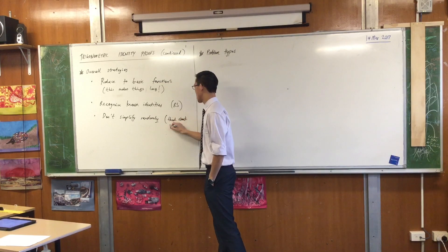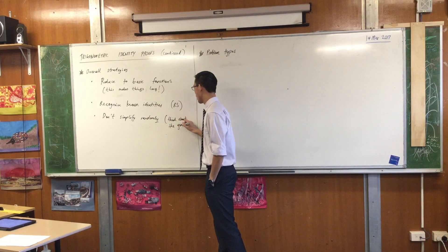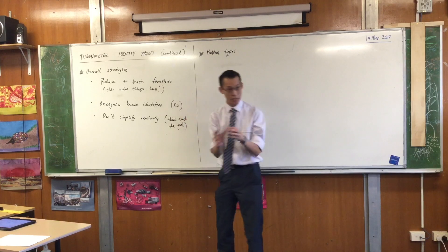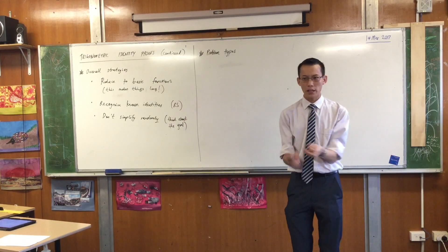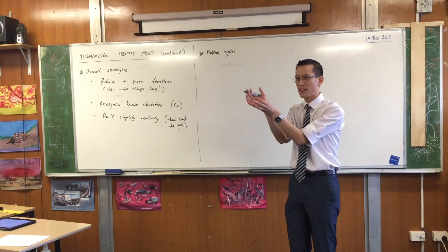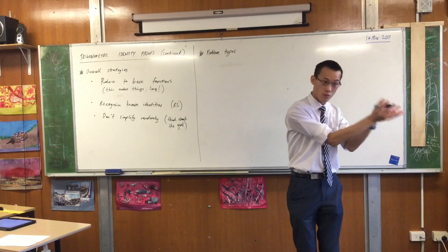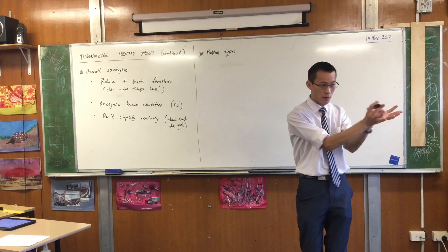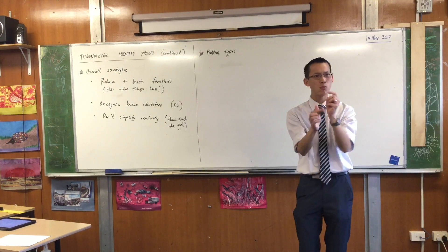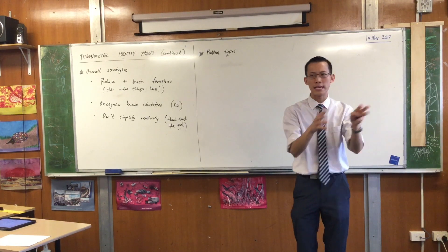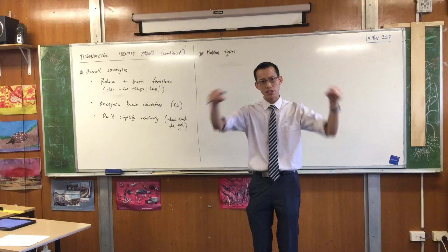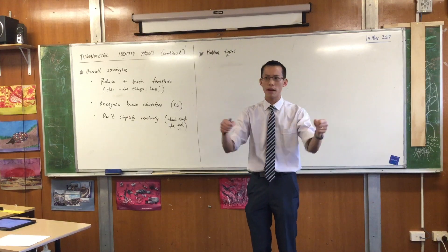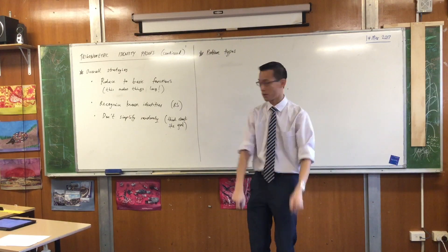The way I always say this is: have one eye on the thing that you are manipulating, and have your other eye on — well, if I started with the left-hand side, I've got to get to the right. So look at the right-hand side. Think: what pieces do I need? Is that thing one fraction or is it two? What am I sort of heading towards?